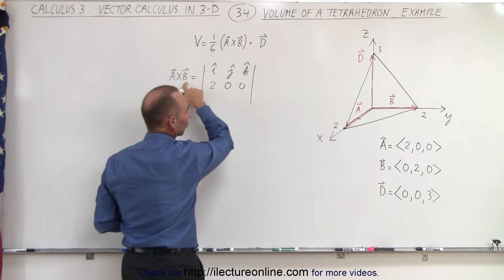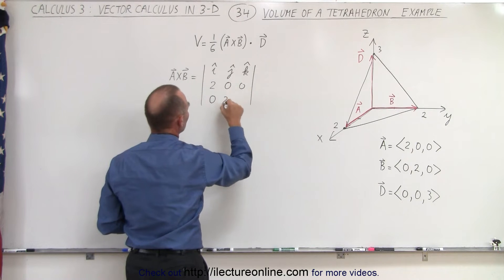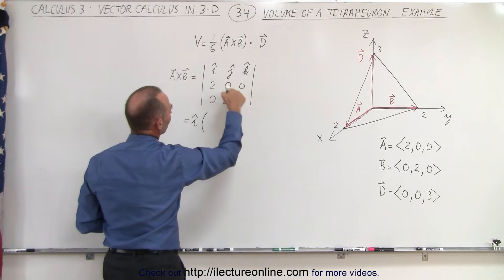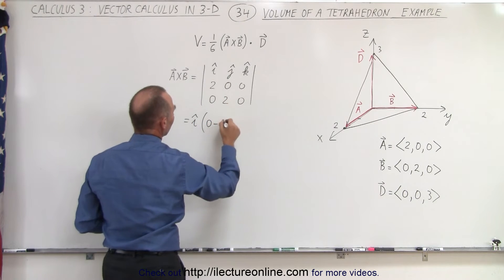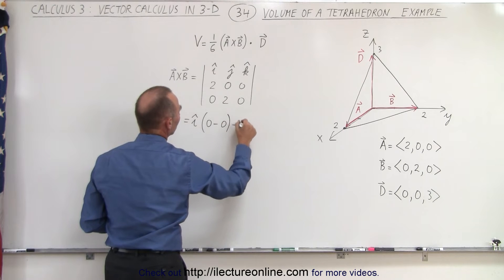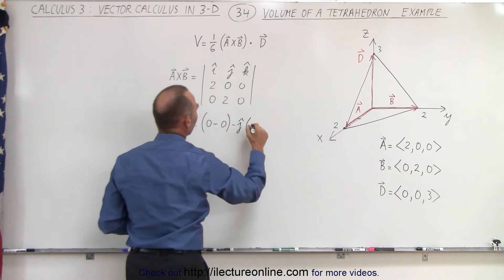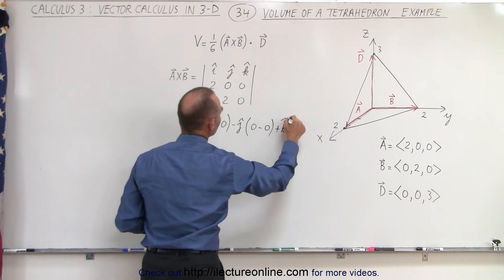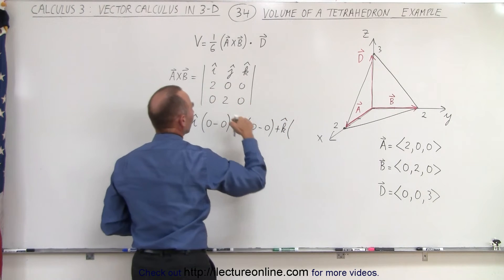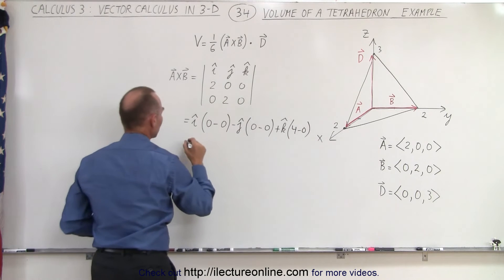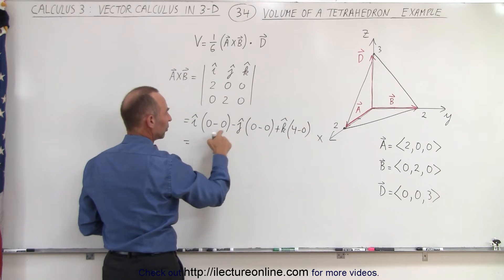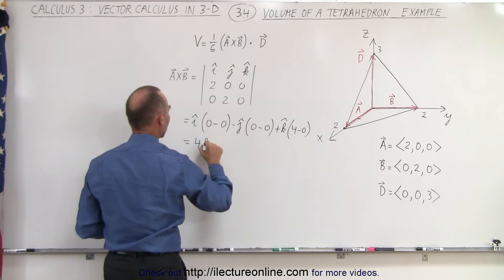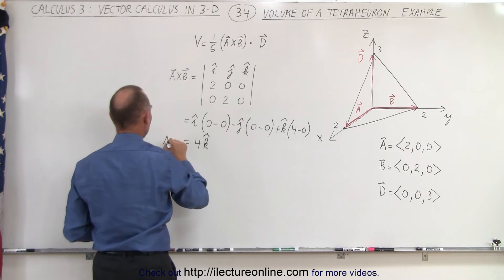The components of B are 0, 2, 0. So that equals i times (0 times 0 minus 0 times 2) minus j times (2 times 0 minus 0 times 0) plus k times (4 minus 0), which means the i and j components drop out and we wind up with 4 in the k direction. So this is A cross B.